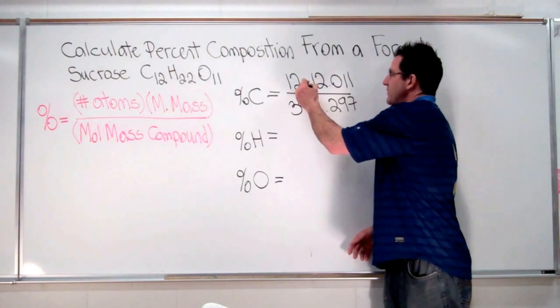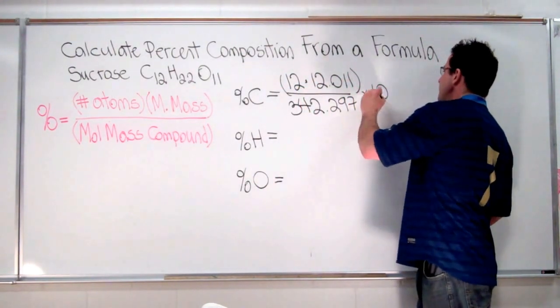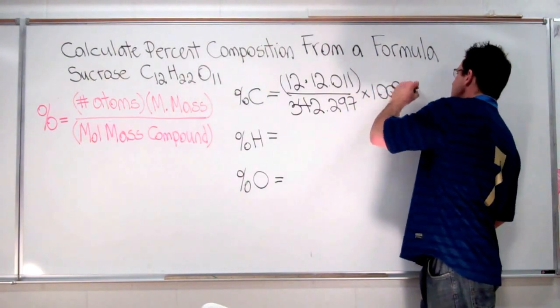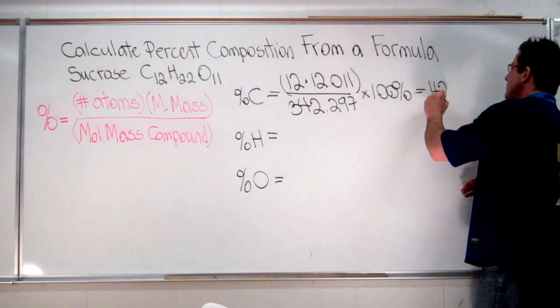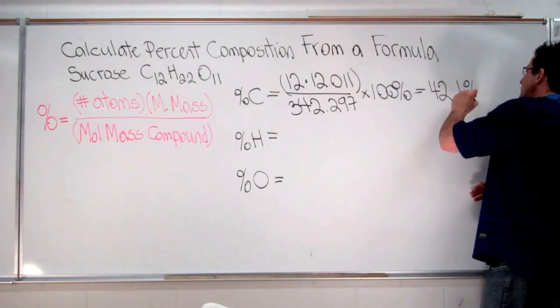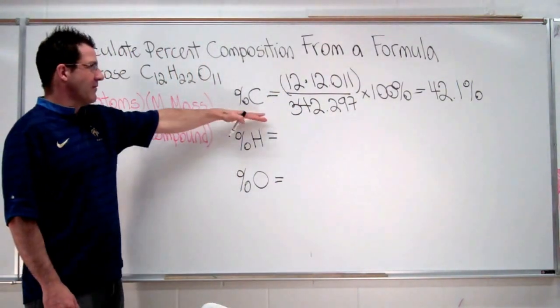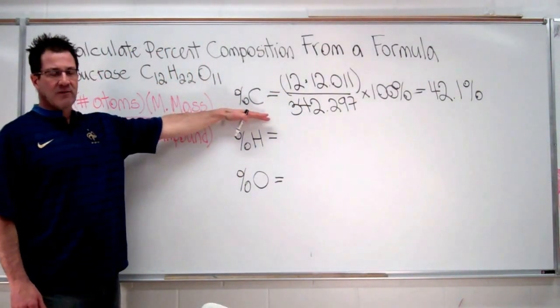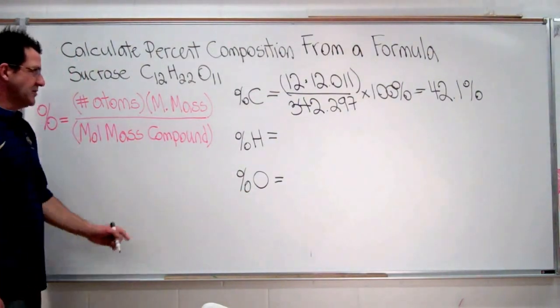So we're going to multiply those together and divide, and then we're going to multiply that by 100. And if we do that, we come up with the percent composition of carbon is 42.1%. So that's how we figure out the percent composition of carbon, and we'll repeat that for hydrogen and oxygen and we'll get the percent composition for each of those.